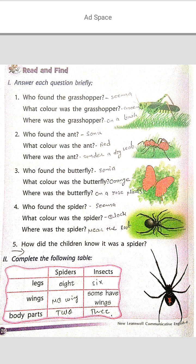Next, complete the following table comparing spiders and insects. Legs: spider has eight, insects have six. Wings: spider has no wings, some insects have wings. Body parts: spider has two body parts, other insects have three. Please pause the video and complete this exercise in your textbook, then note down in your notebook.